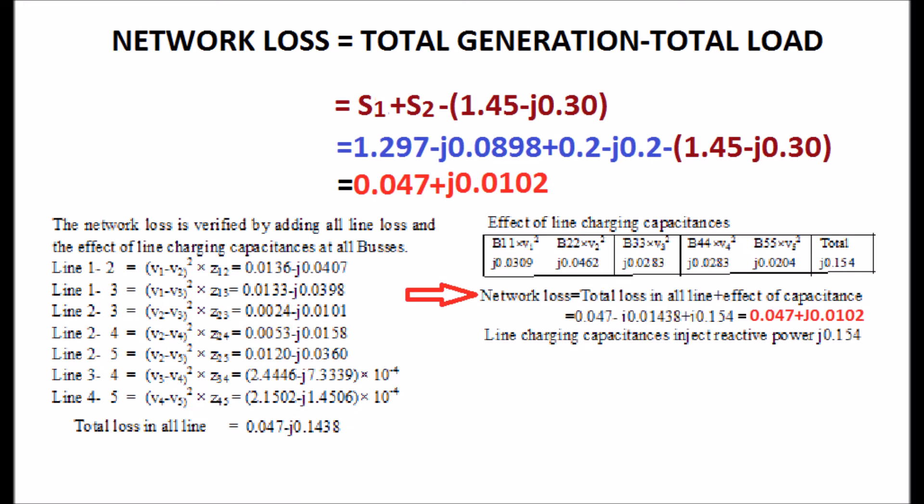The total loss in all lines is added with the effect of capacitance, which gives the network loss. The loss is also displayed in red color. We get the same network loss.